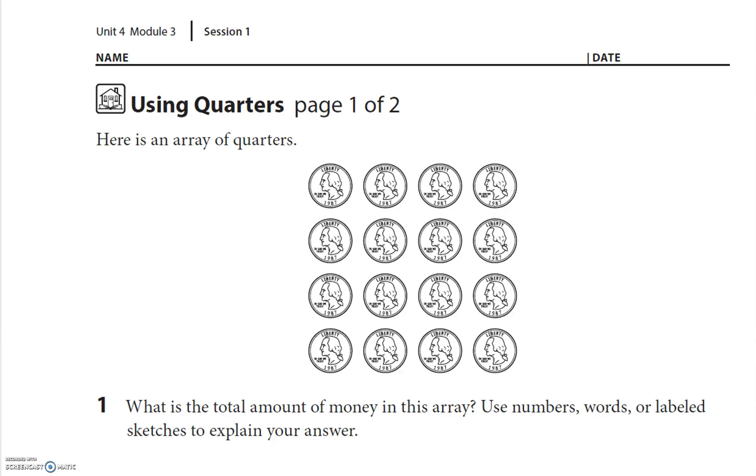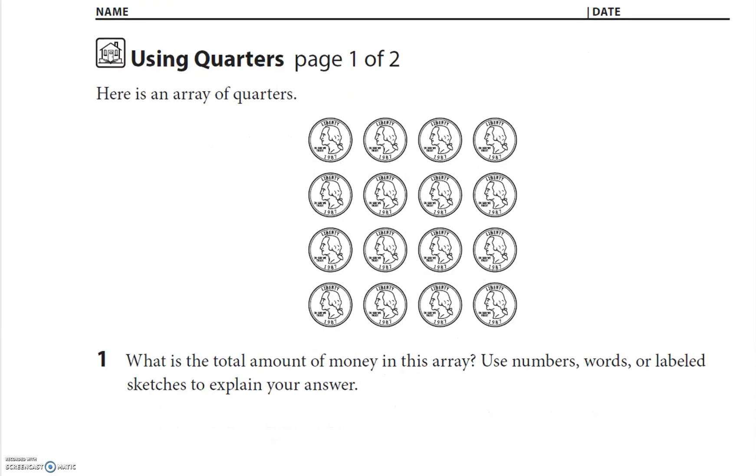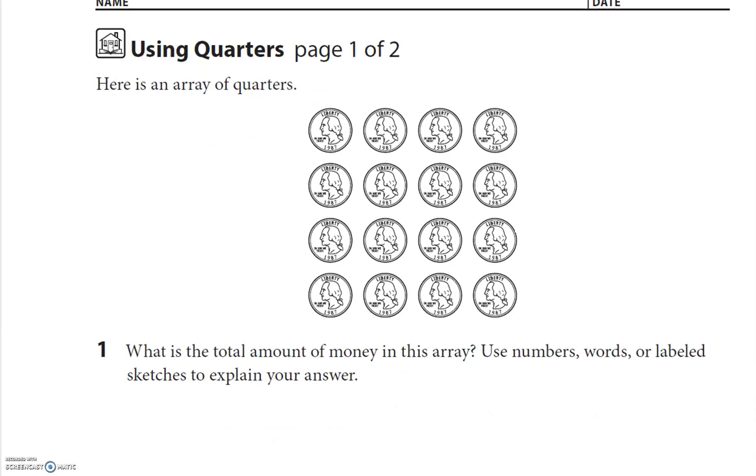Remember, if you get it, stop it, try it, and then press play to check the answers. Check it out, it looks like quarters here and it looks like they want to know the total amount of money in this array. So if you get it, you can count it up.